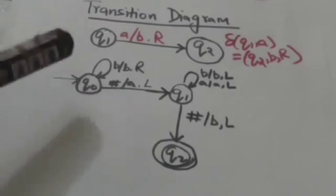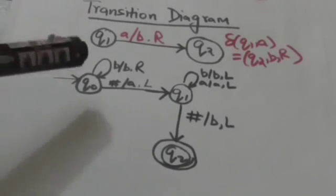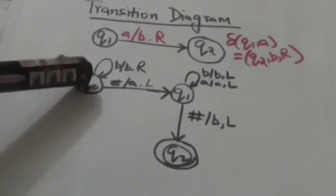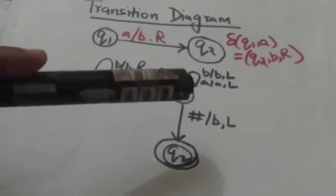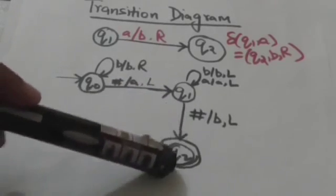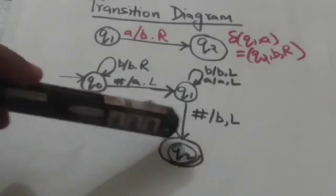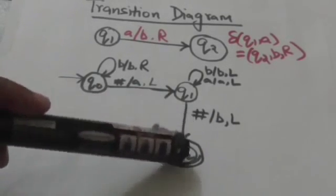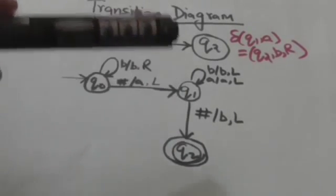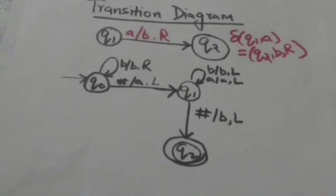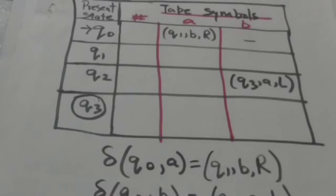The initial state is represented by putting an arrow before the node. Here q0 is the initial state. Final states are represented by encircling the nodes of the graph. Here this node is encircled, so q2 is the final state of the Turing machine.